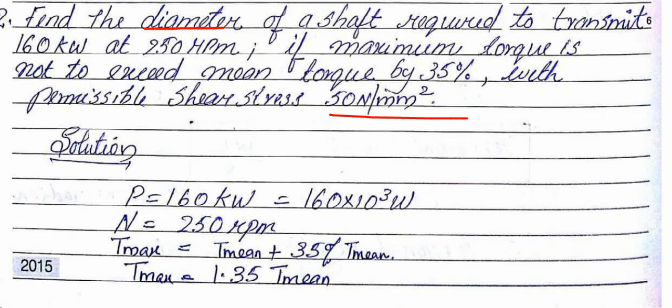If the maximum torque is not to exceed mean torque by 35 percent, then T_max = T_mean + 0.35×T_mean, so T_max = 1.35×T_mean. The permissible shear stress is 50 N/mm². We substitute the power value into the equation.